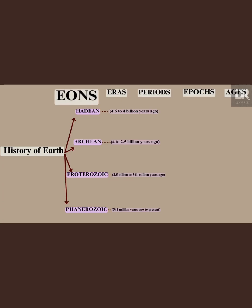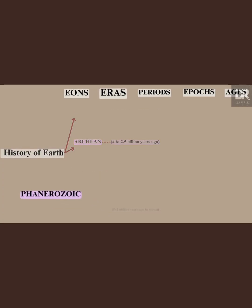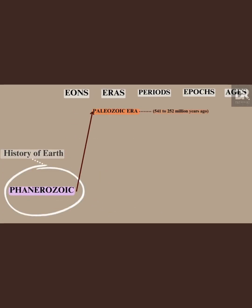Subdivisions of eons, lasting tens to hundreds of millions of years, are called eras. The Phanerozoic eon has three eras: the Paleozoic era, the Mesozoic era, and the Cenozoic era.